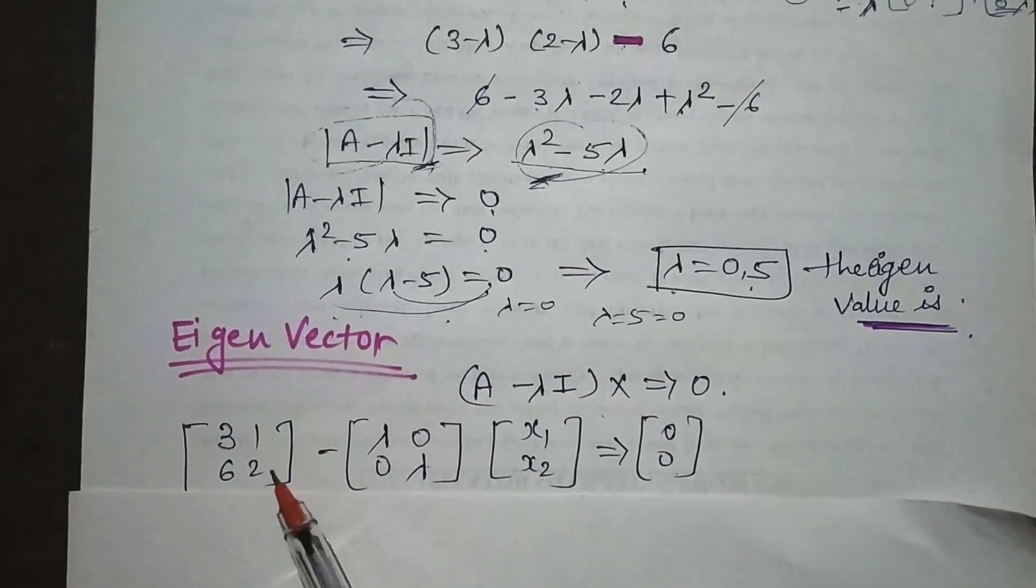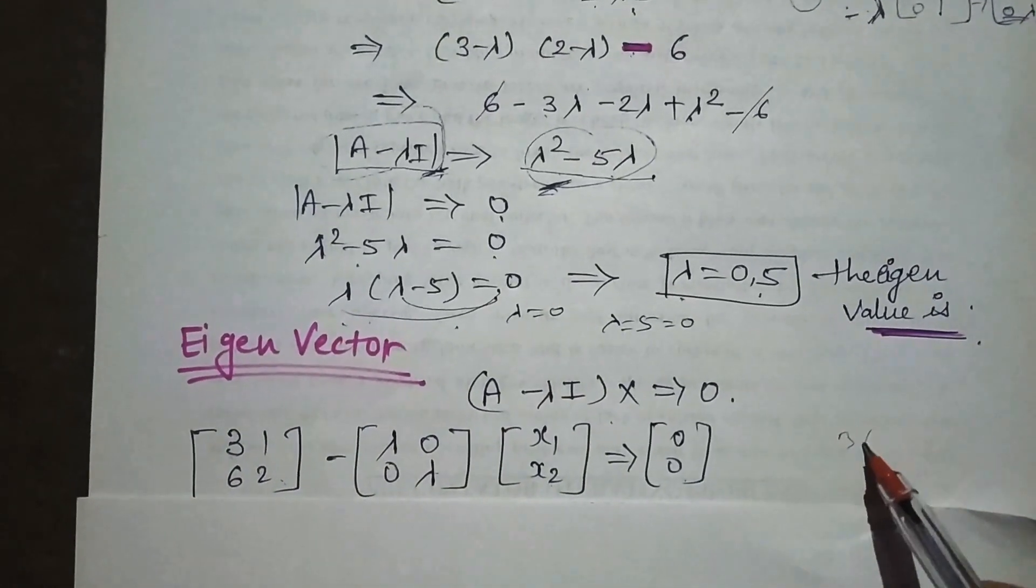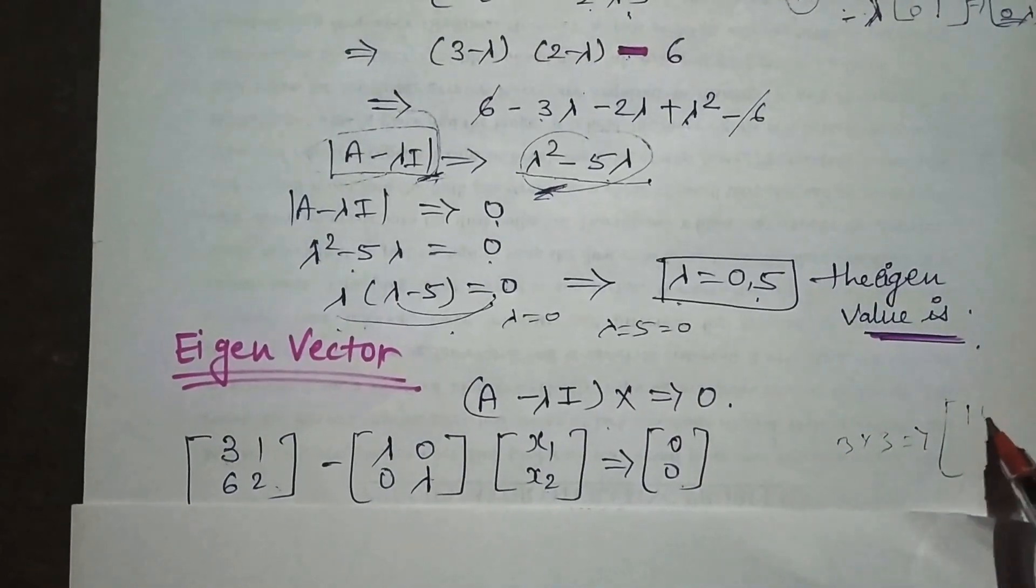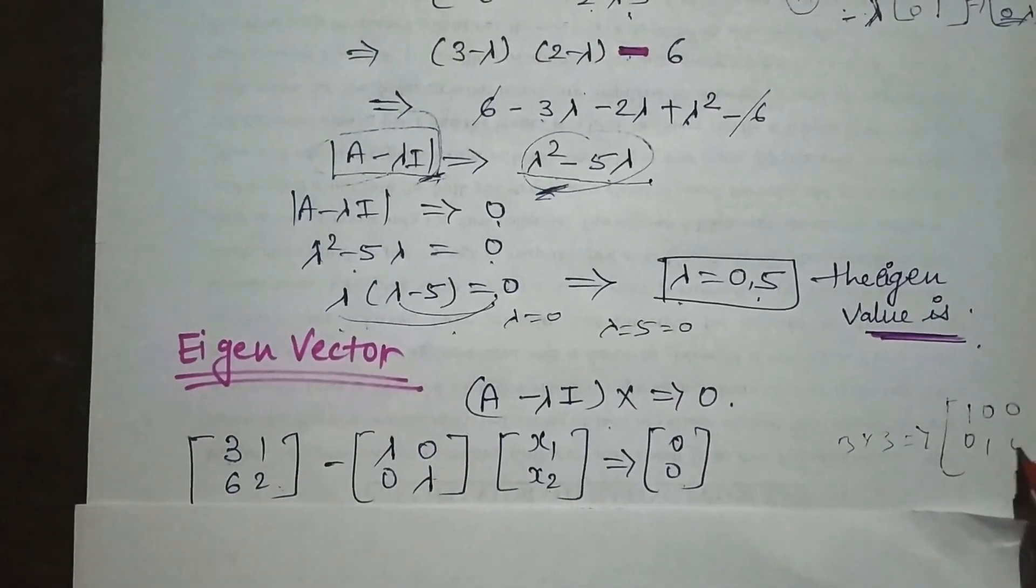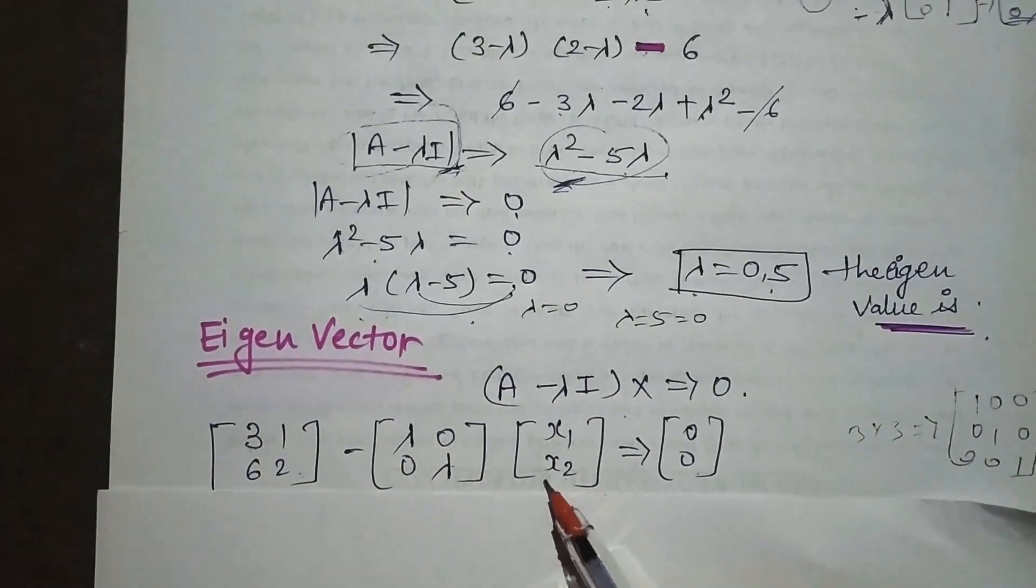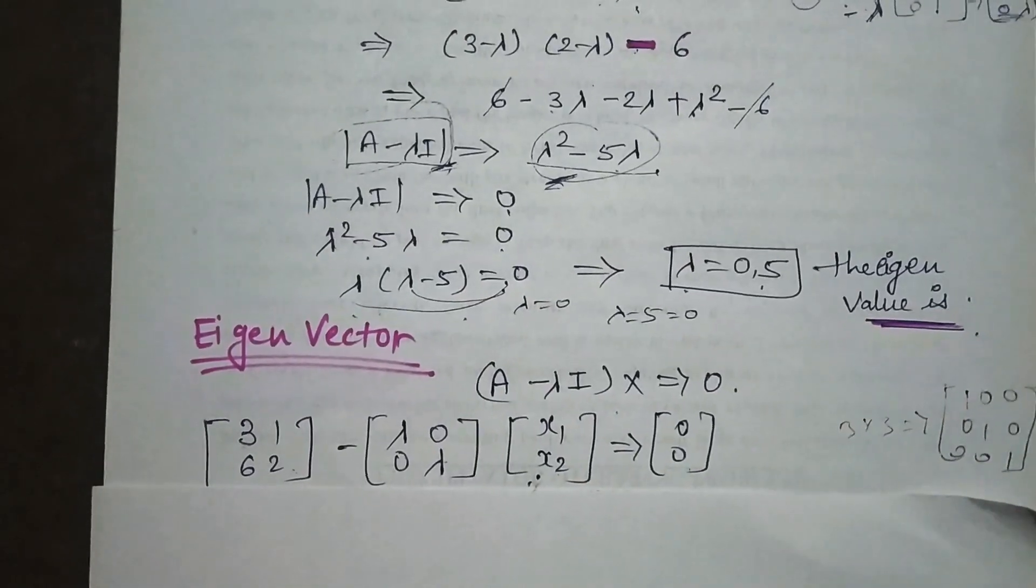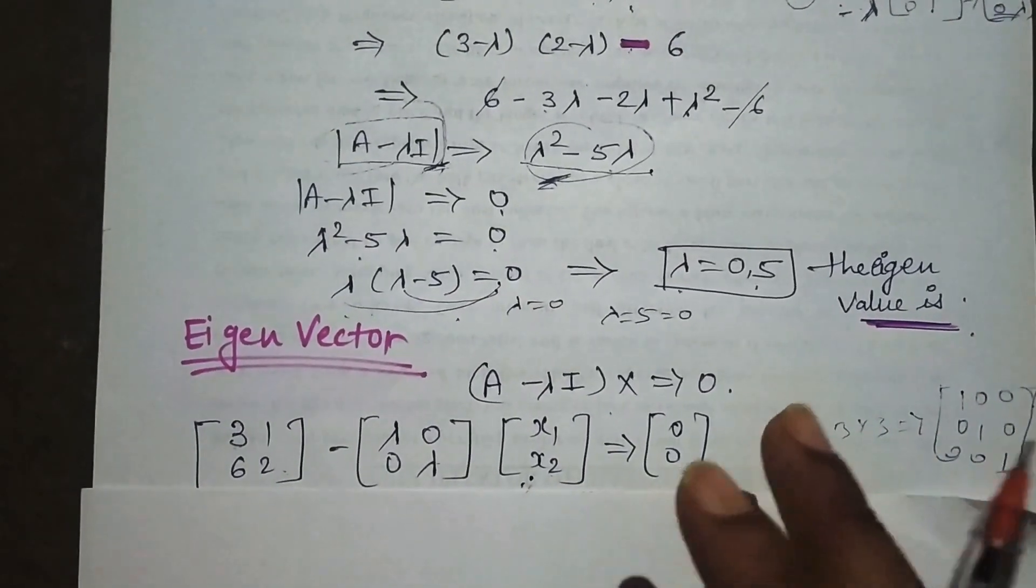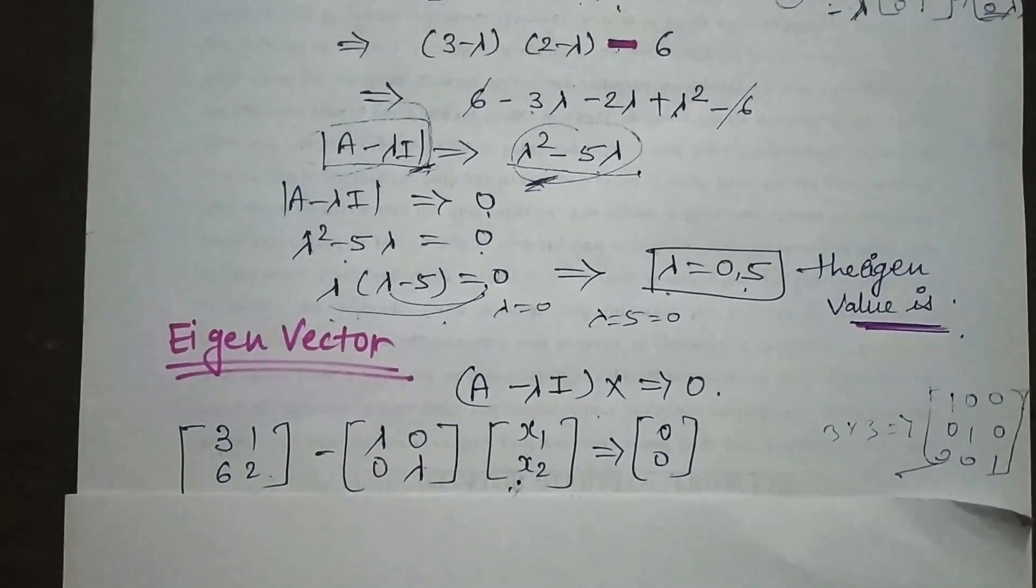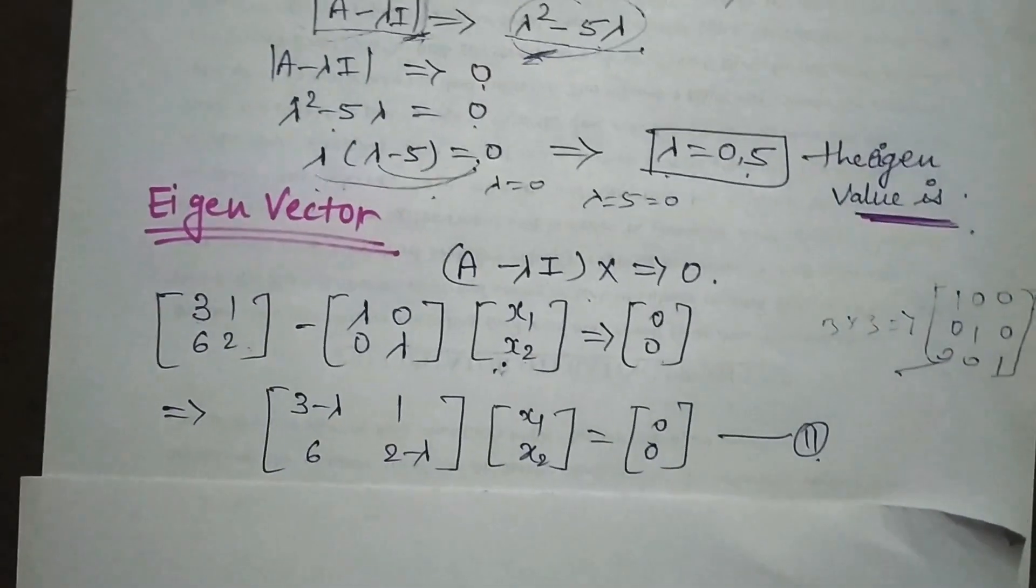This is a 2×2 matrix, two rows and two columns. If it were 3×3, the I matrix would be [1,0,0; 0,1,0; 0,0,1] and we would have x₁, x₂, x₃. But here we have two values. Let's proceed.